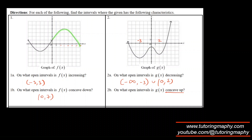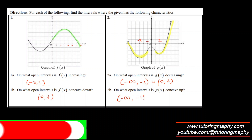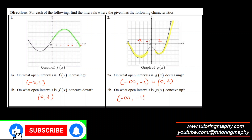In part b, they're asking when is it concave up. Concave up is a smiling face function. The smiling face appears from a certain region, changes to a frowning face, then smiles again. So concave up is from negative infinity to negative 1, union 1 to infinity.